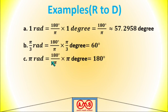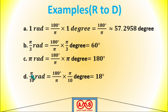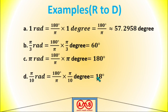π radians equals (180/π) × π = 180 degrees, since π and π cancel. Finally, π/10 radians equals (180/π) × (π/10) = 18 degrees, because π cancels and 180 divided by 10 is 18. So the value of π/10 radians is equal to 18 degrees.